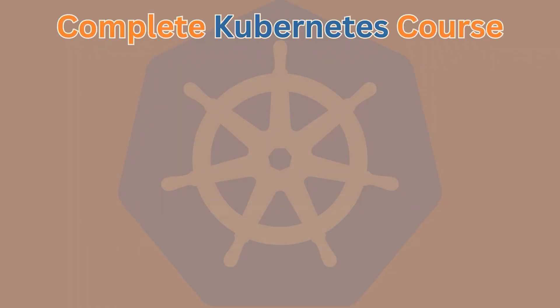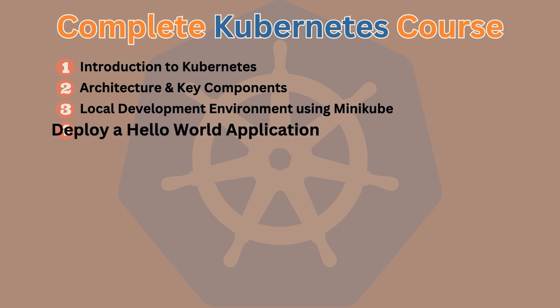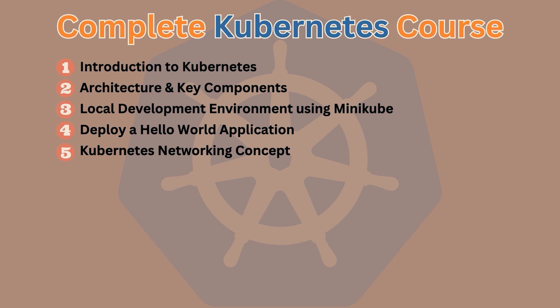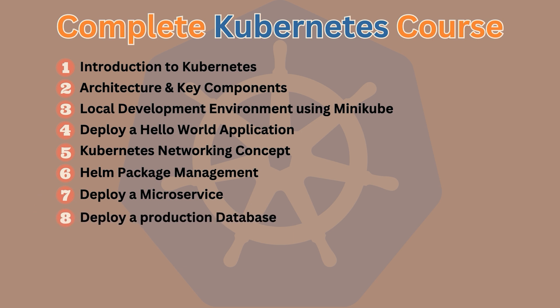So you can probably start to imagine how big of a system Kubernetes really is. This is why I'm going to break this down into a series of smaller videos. These videos focus on teaching specific concepts through projects. If you're still watching, you've already been introduced to Kubernetes — there is no going back. Next is Kubernetes architecture and how its key components interact with each other. Then you'll see how to run Kubernetes locally using Minikube, deploy a hello world application, dive into networking concepts, package management using Helm, deploy a production-grade microservice, set up a production database, and finally do monitoring and logging for Kubernetes applications.